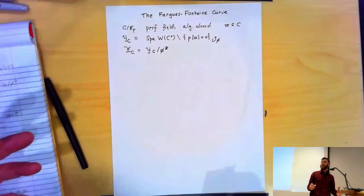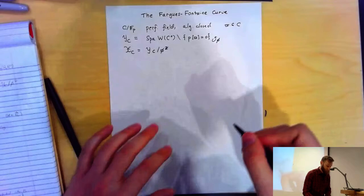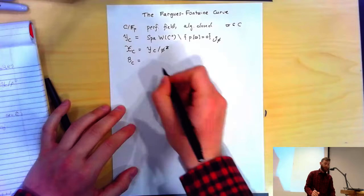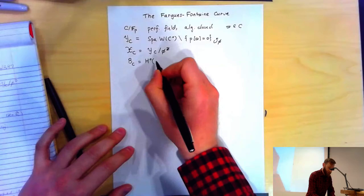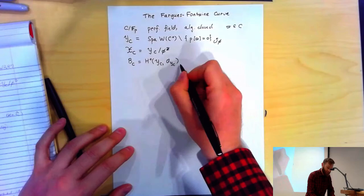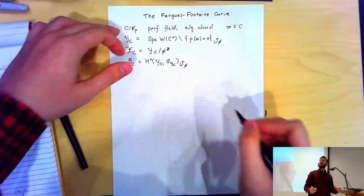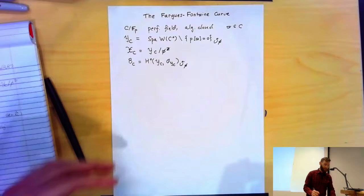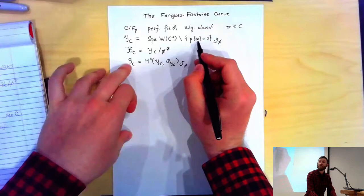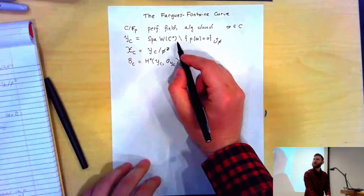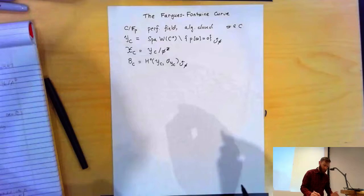After doing this, you get this lovely adic space which happens to be proper — something like compact. It's helpful to make a few more definitions. There's a ring B_C — a really huge ring, something like one of Fontaine's period rings, in that it's enormous and has an action of Frobenius. On the original space Y_C, I can consider the ring of global sections of the structure sheaf. This ring contains W(C°) but much more — you've completed W(C°) with respect to a family of norms; sometimes it's a Fréchet completion.